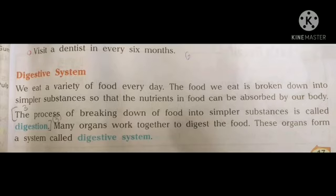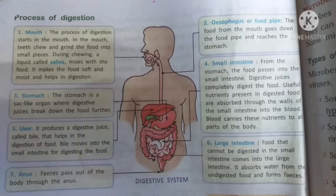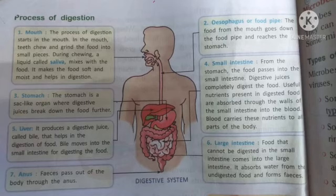Many organs work together to digest the food. These organs form a system called the digestive system. Next is the process of digestion. In the process of digestion, we read about the role of every organ that helps in digestion of food.